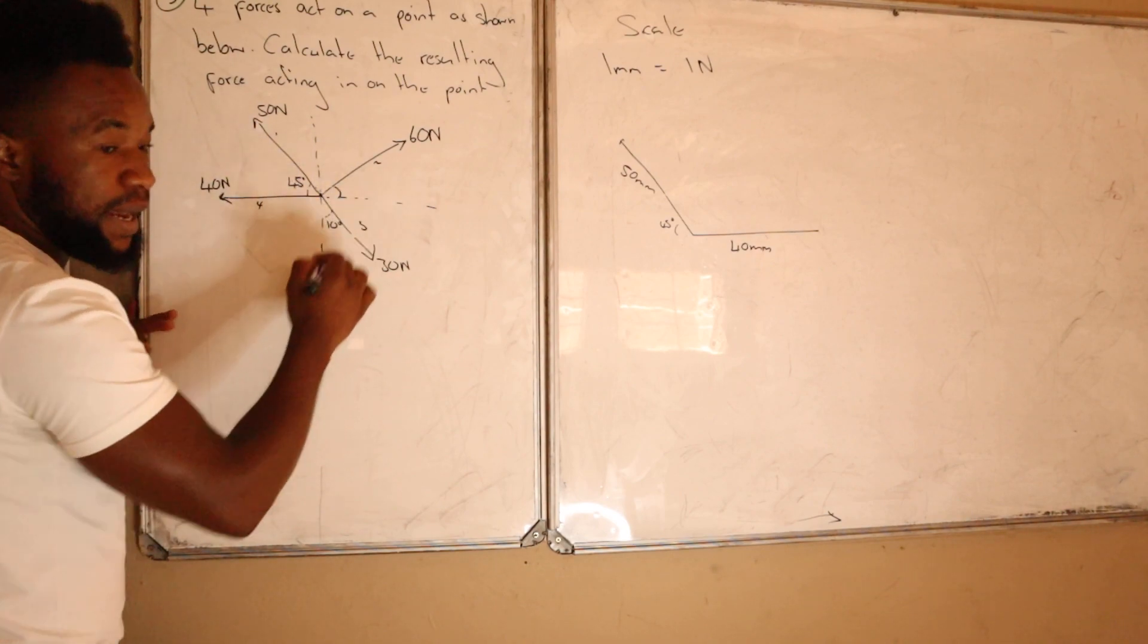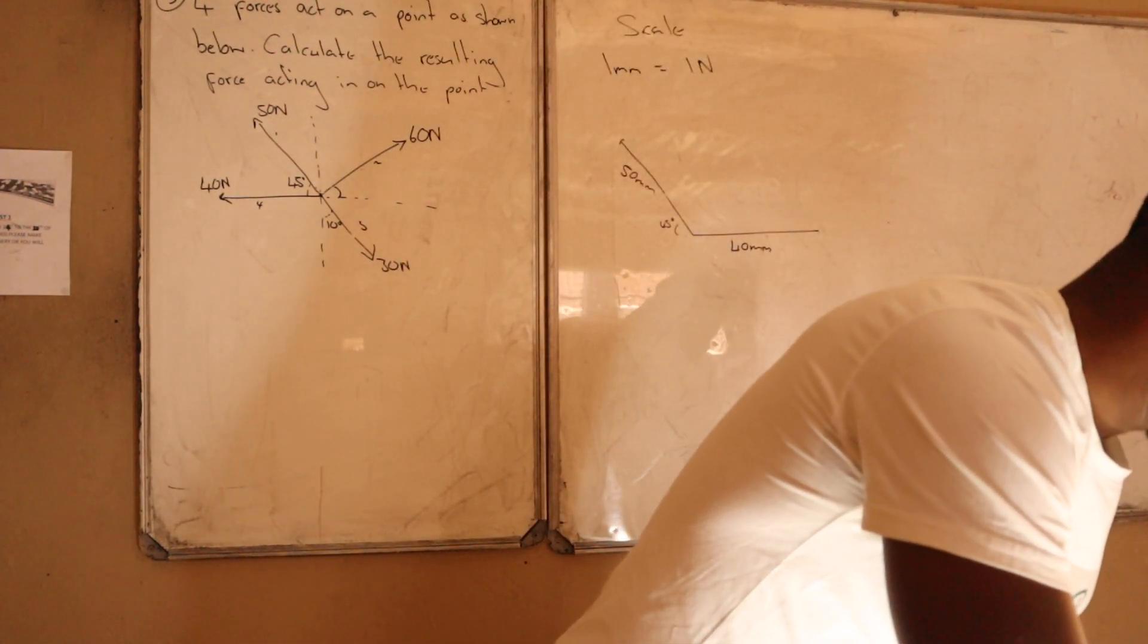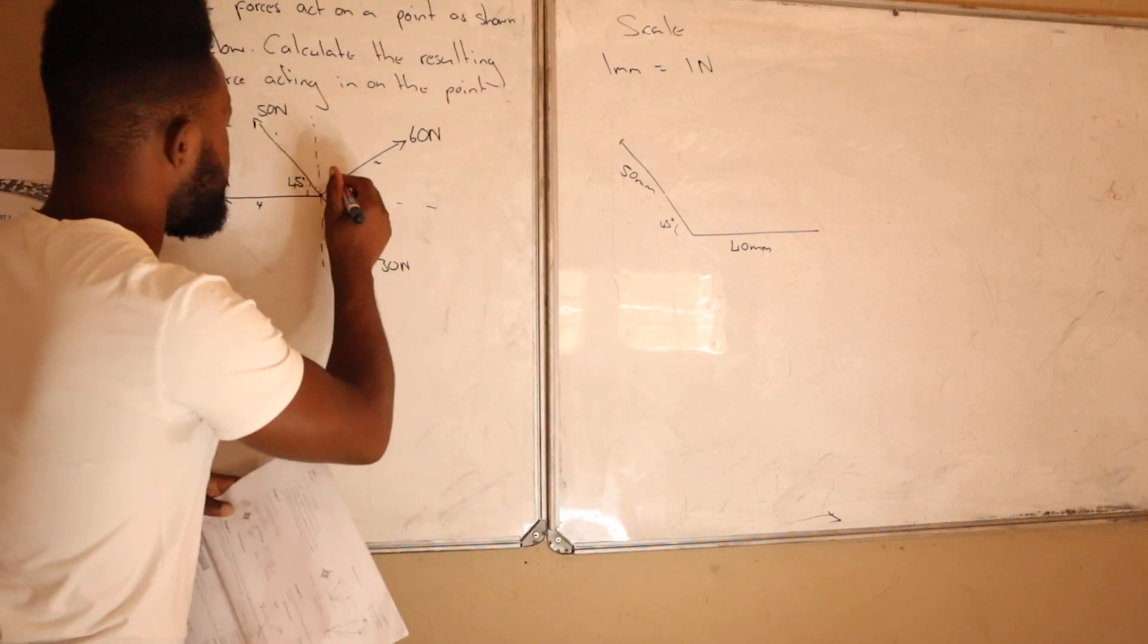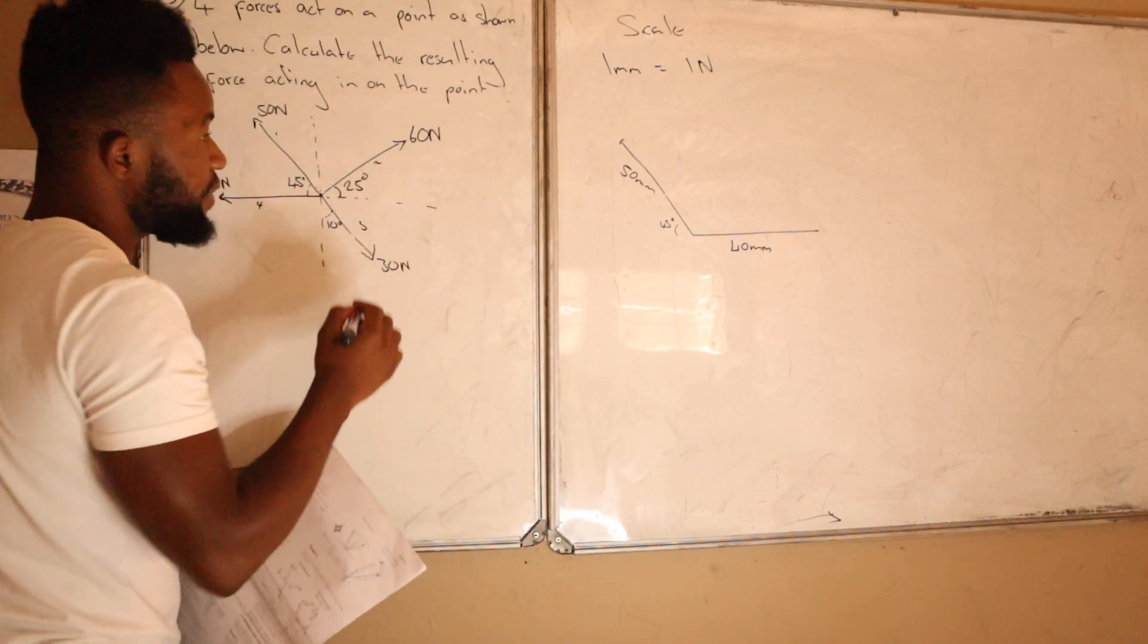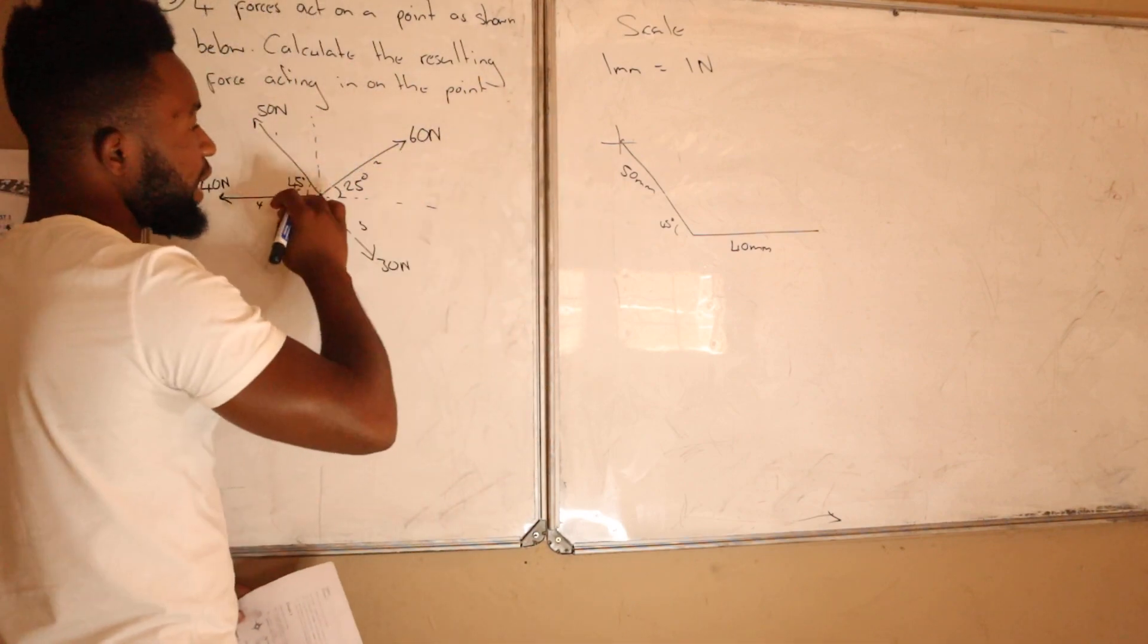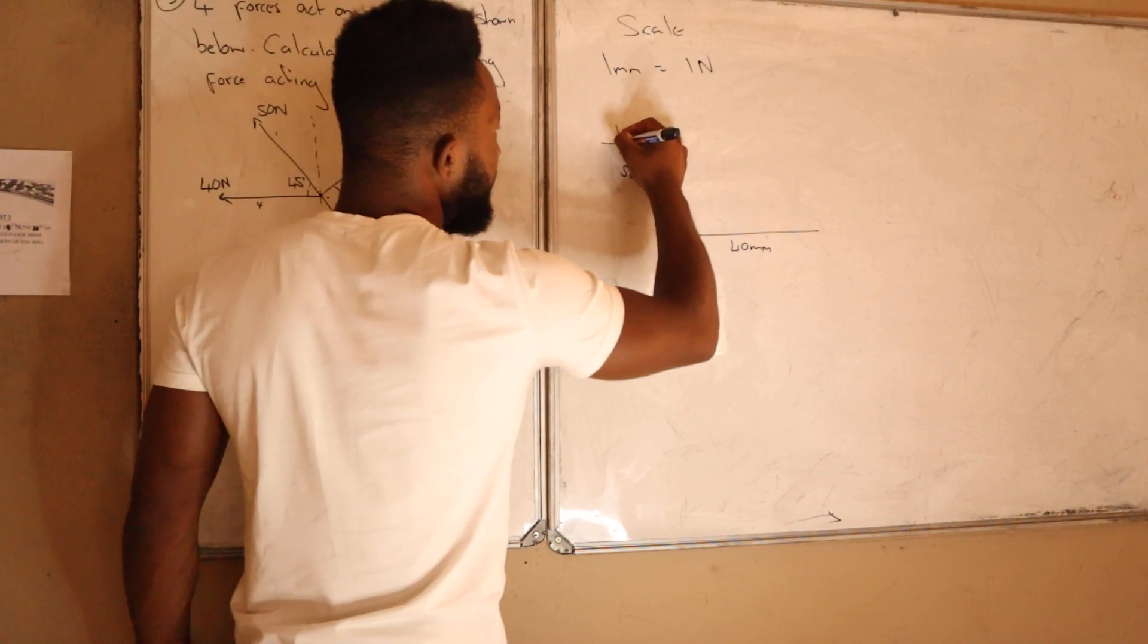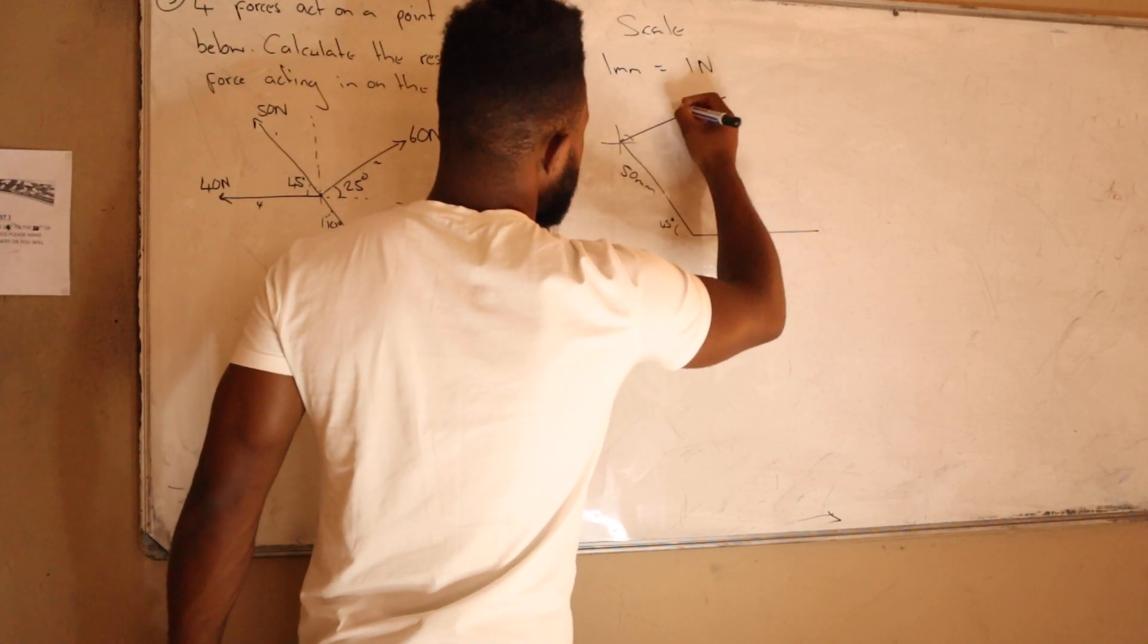It's 25 degrees. So what you do is you draw your T-junction here. You have another line which is going that side, which is 60 millimeters. You measure 25 degrees, you have your line which is going this side, which is going to be 60 millimeters.